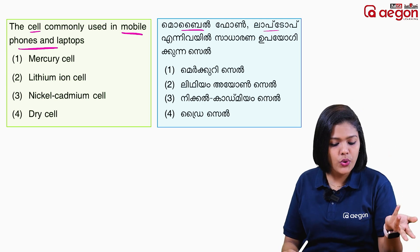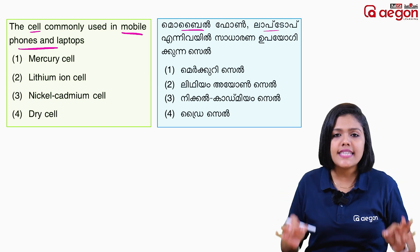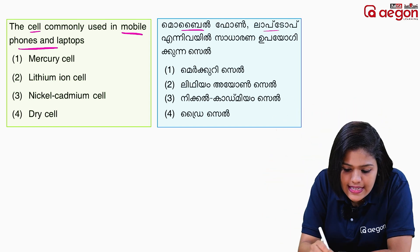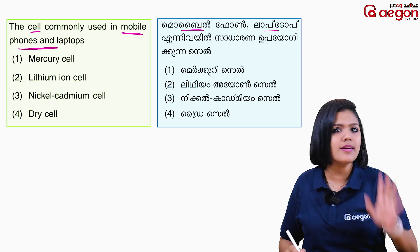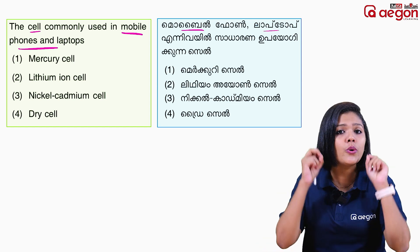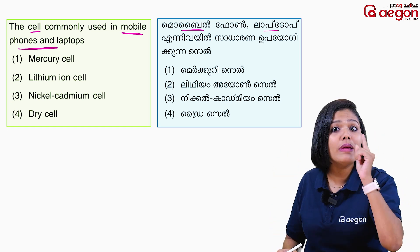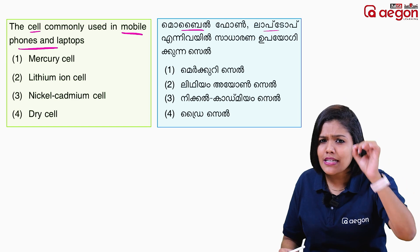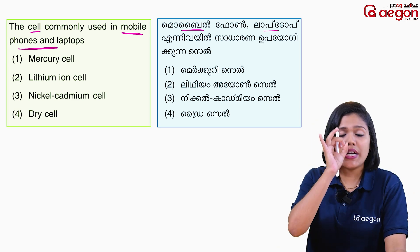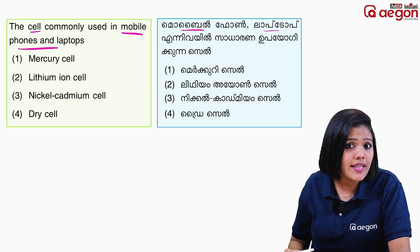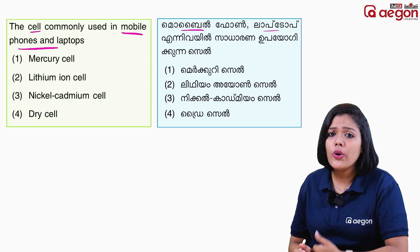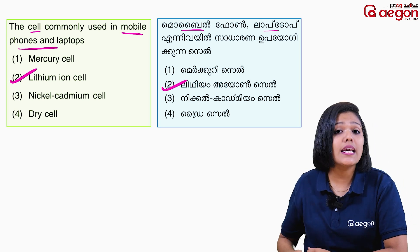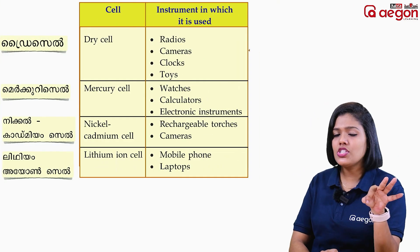There are 4 options. If you are asked a question with options, you select the correct answer. If the answer is asked, the answer is the lithium-ion cell. The correct answer for mobile phones is the lithium-ion cell.